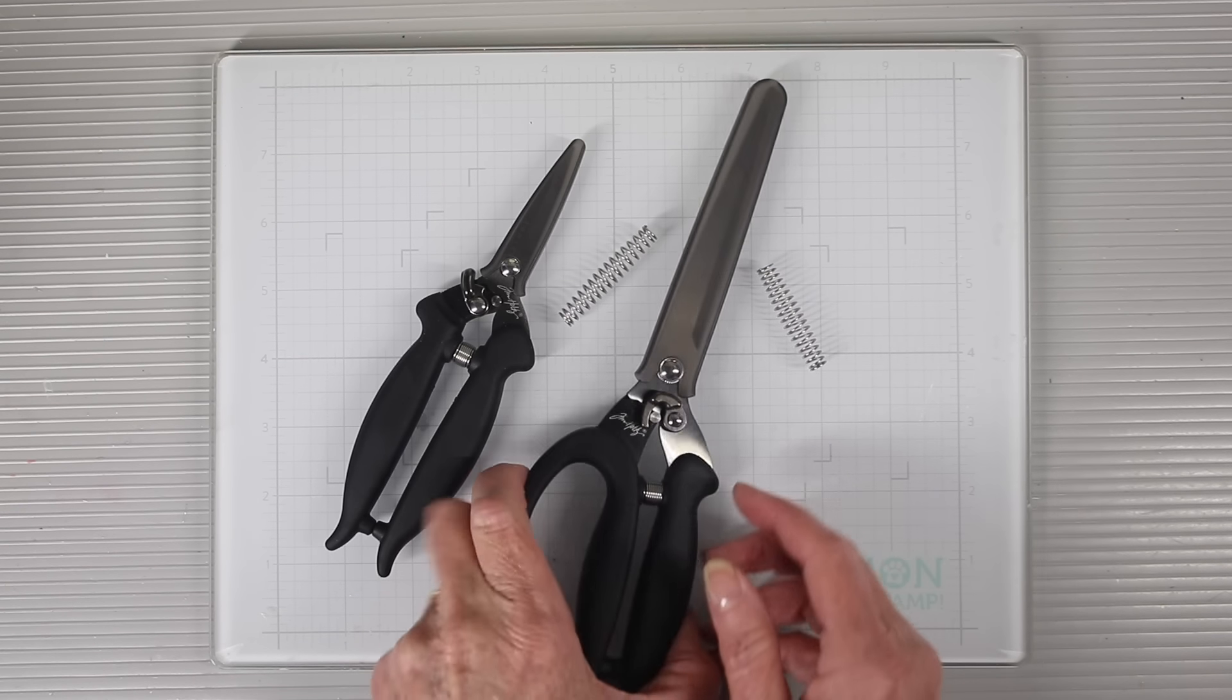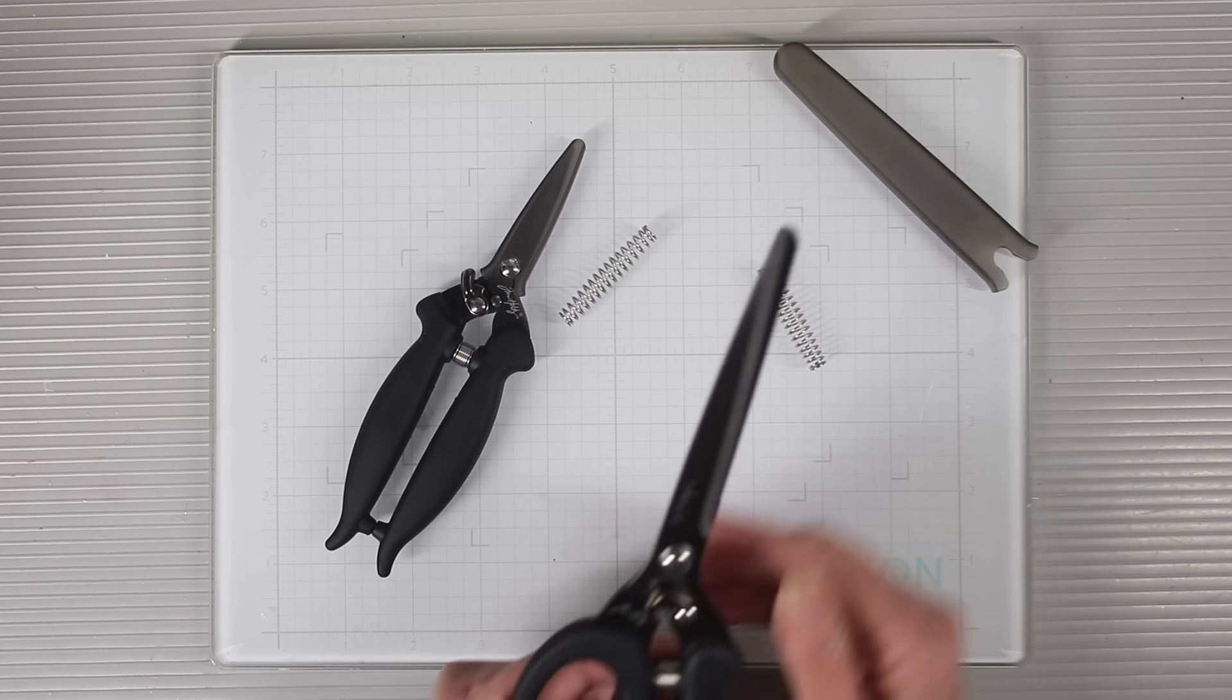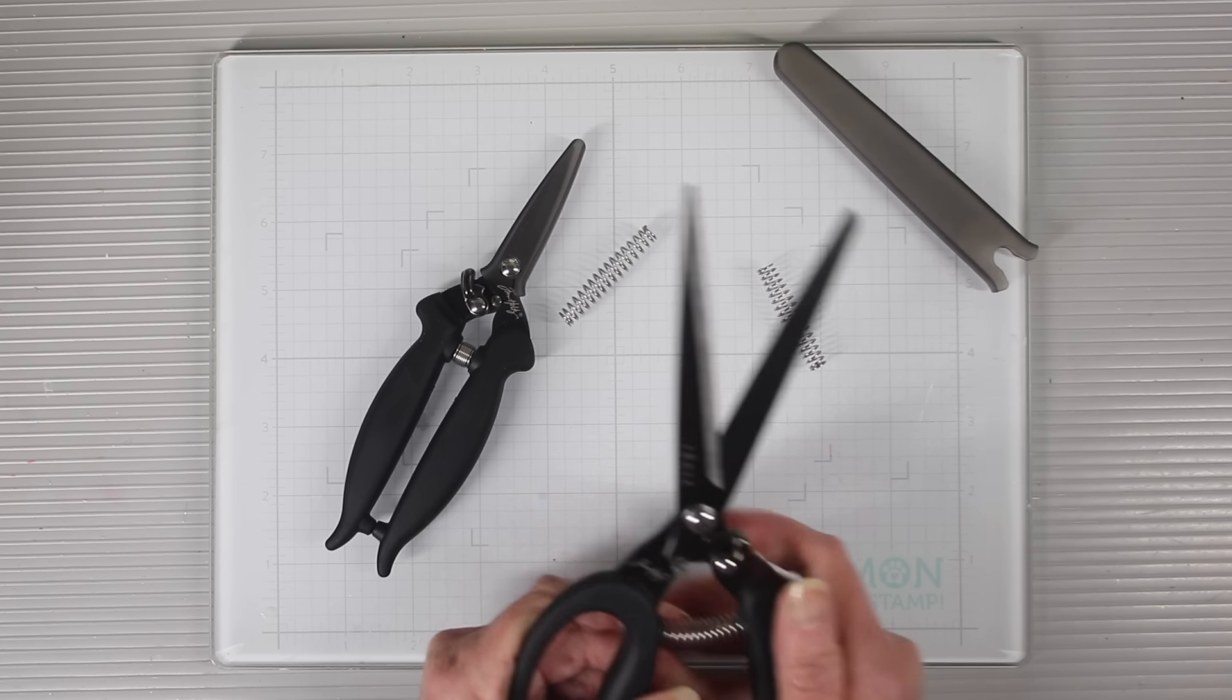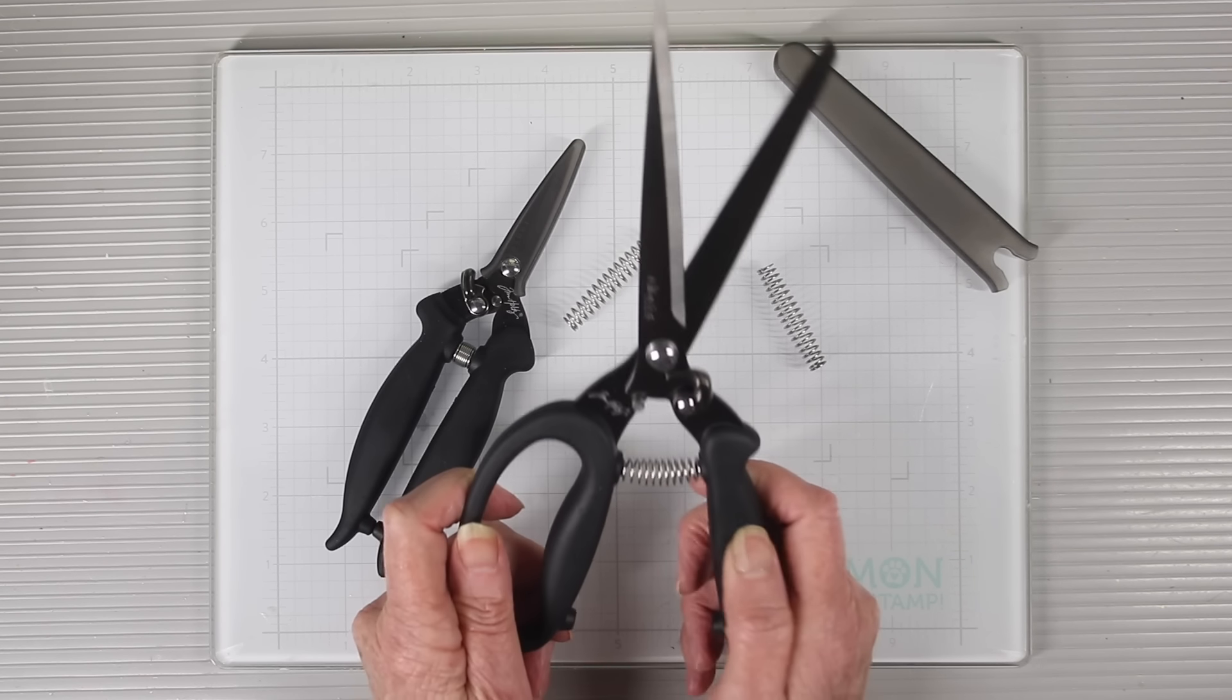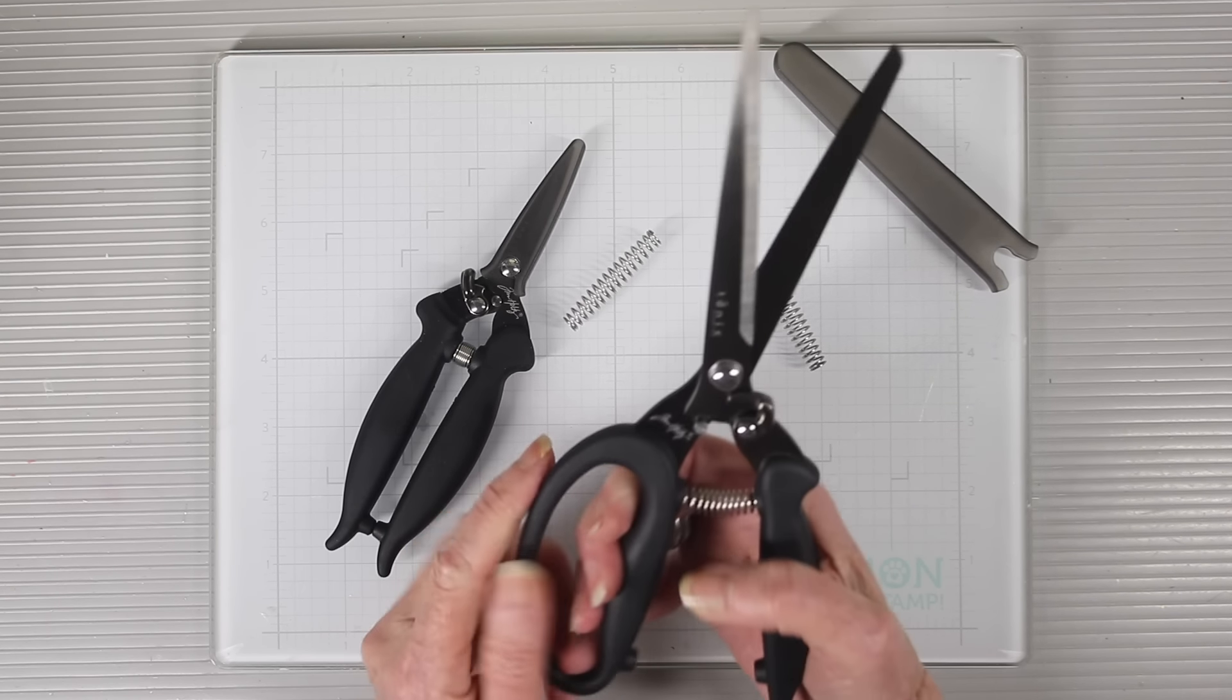Now let's go back to those springs and why you have a choice of two. So the scissors come with a lightweight spring tension. This is a thinner spring, and it has less resistance for easier cutting.